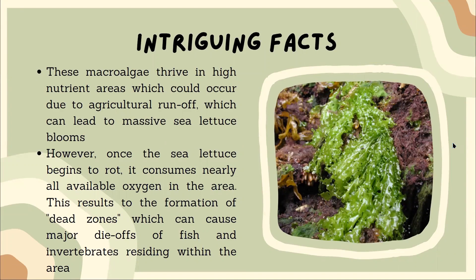Some intriguing facts about Ulva lactuca: these macroalgae thrive in high nutrient areas with high amounts of nitrogen and potassium, which can occur due to agricultural runoff, leading to massive sea lettuce blooms. However, once the sea lettuce starts to rot, it consumes nearly all oxygen in the area, resulting in anoxia and the formation of dead zones, causing major die-offs of fish and invertebrates residing within the area.